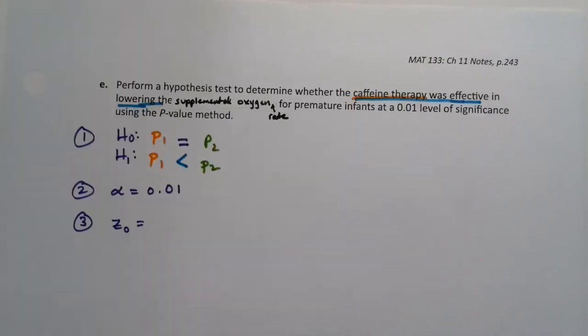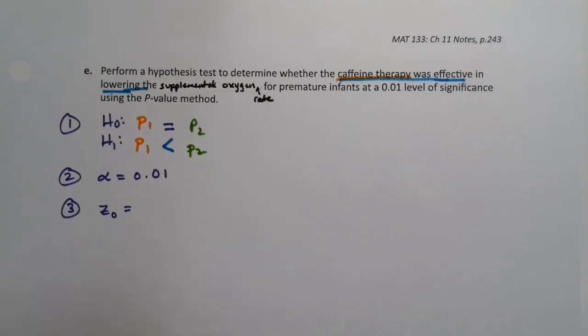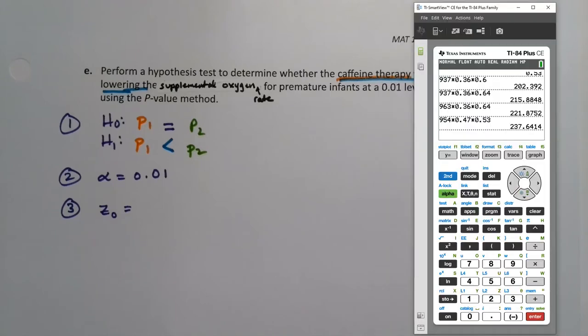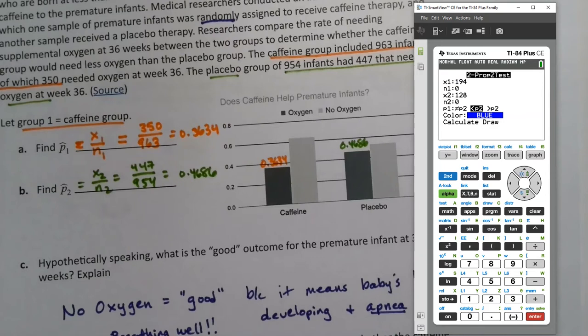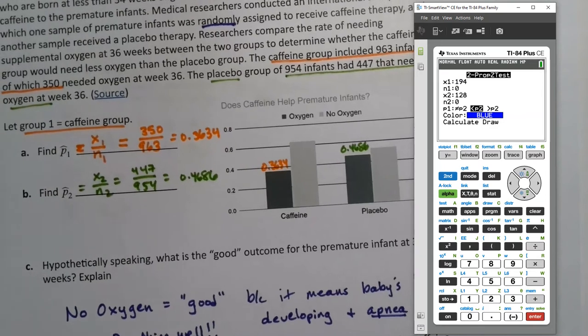Now, in the calculator, I'll do that first, because it shows the two prop Z test right there. So in the calculator, you go to Stat, you go to Tests, you get a two prop Z test, which is number six. And you enter your values. X1 for us was the placebo group for one, which was 350. That's why we figured that out for the first question. So 350, 963, if I get them right, 447, 954.